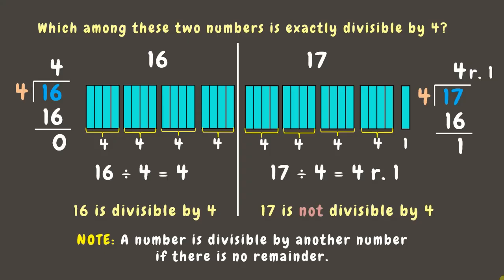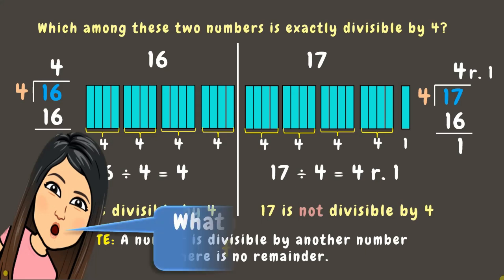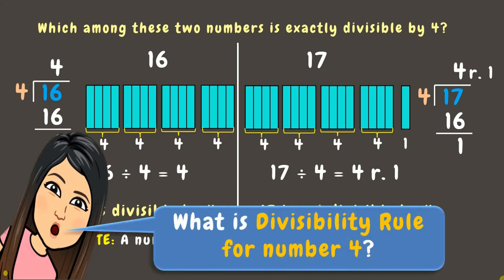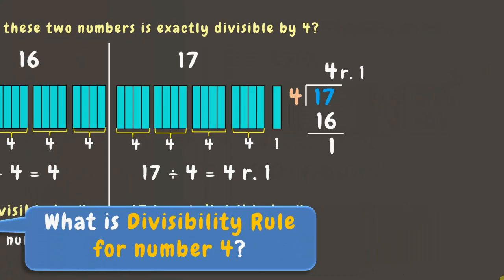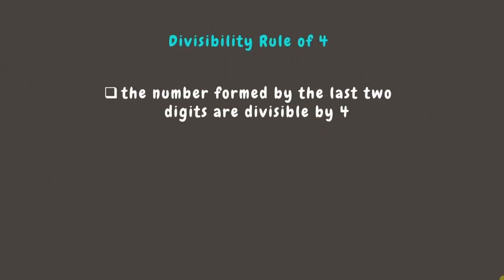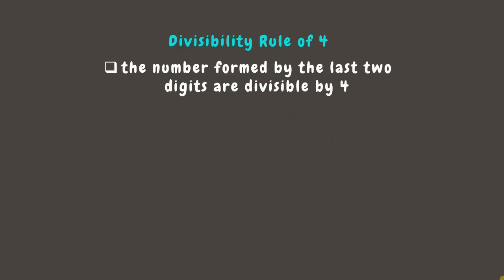What do you think is the divisibility rule for the number four? Let's find out. A number is divisible by four if either the number formed by the last two digits is divisible by four, or if those digits are zeros. If you meet either of these two criteria, you can say that a number is divisible by four.